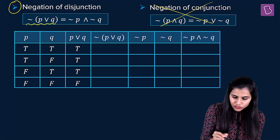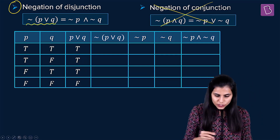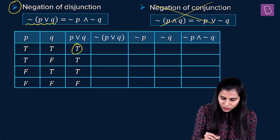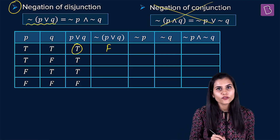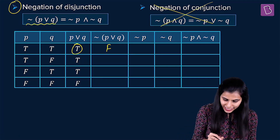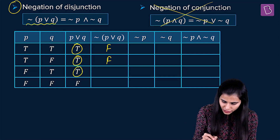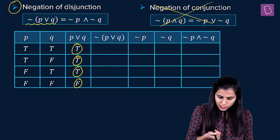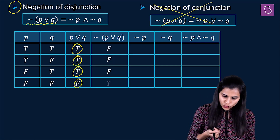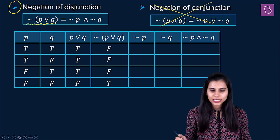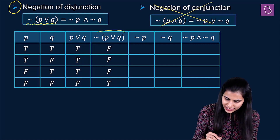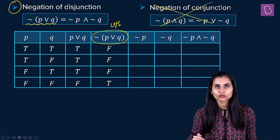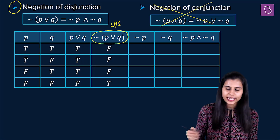Now compute negation of (P or Q): wherever P or Q is true, the negation is false; wherever it is false, the negation is true. So negation of (P or Q) gives: false, false, false, true. This is the left-hand side column.